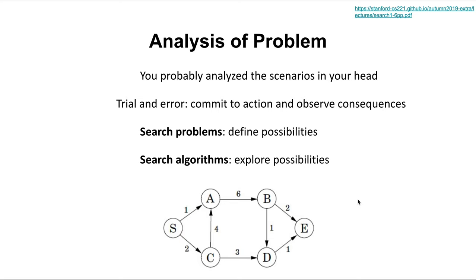Search algorithms have two essential components. There's the search problem — finding what possibilities are possible and how you're going to take them. The actual search algorithm is how we explore those possibilities in an efficient way. Your brain was doing brute force trial and error to try what works, observing consequences and modifying the next possibility. The actual search algorithm is how you tested and explored those possibilities. That's the basic layout for any graph or search algorithm problem.